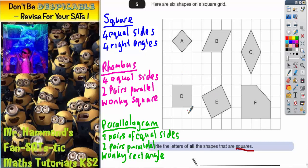So, which ones are squares then? Well, a square has got to have 4 equal sides. Now they've all got 4 sides except for shape F which has actually got 5 sides. So shape F can't be a square.